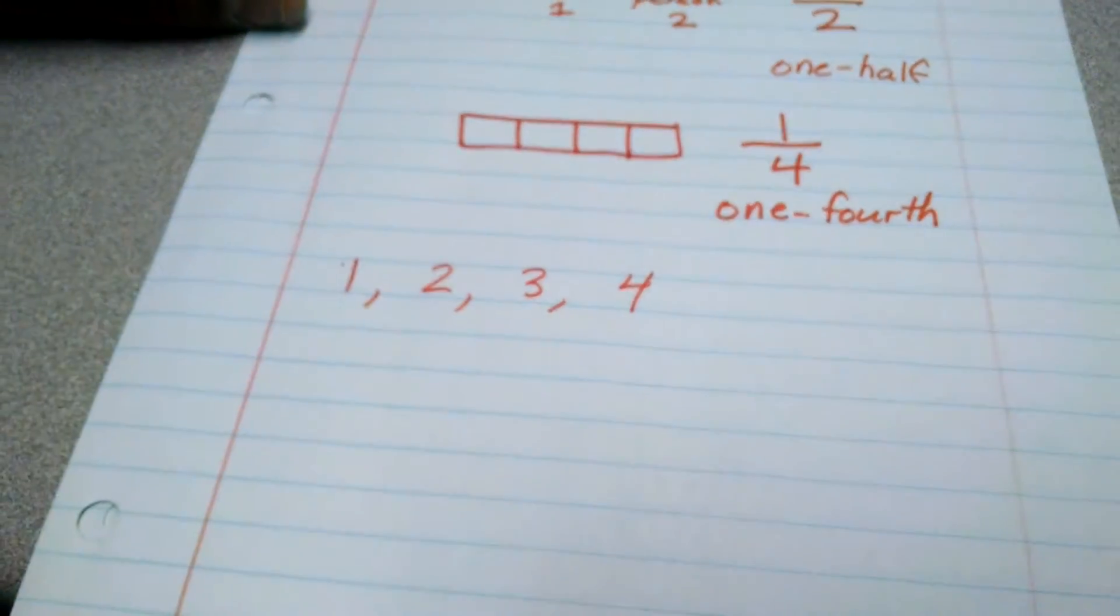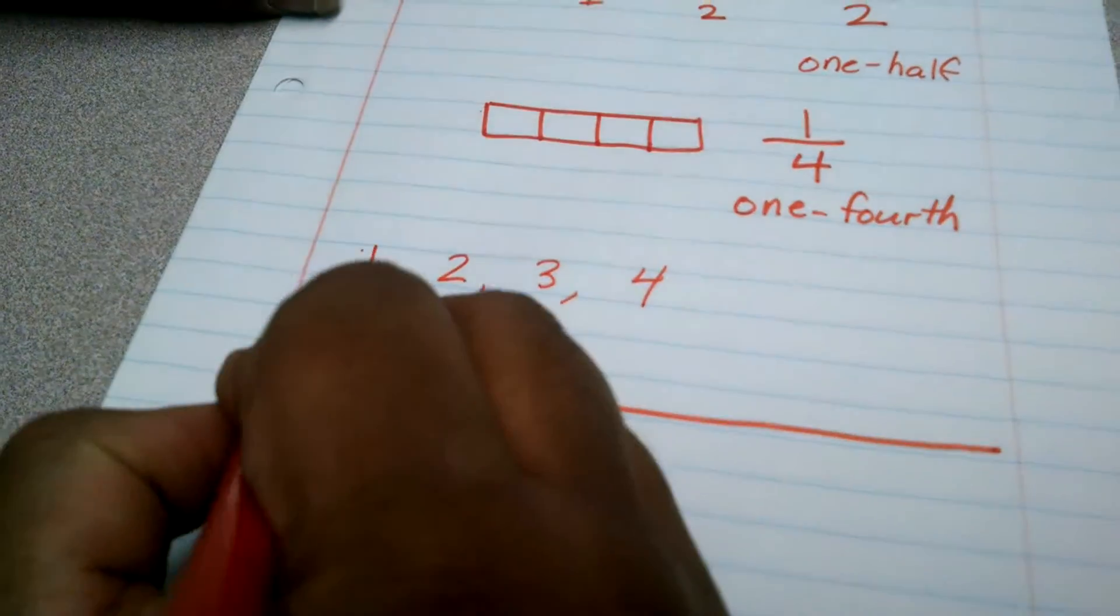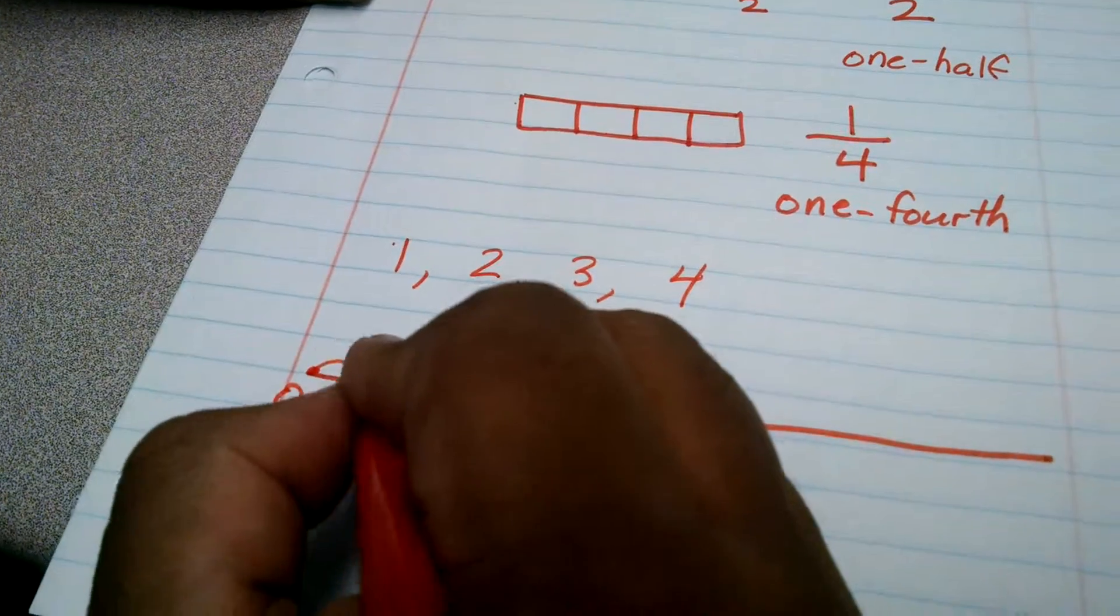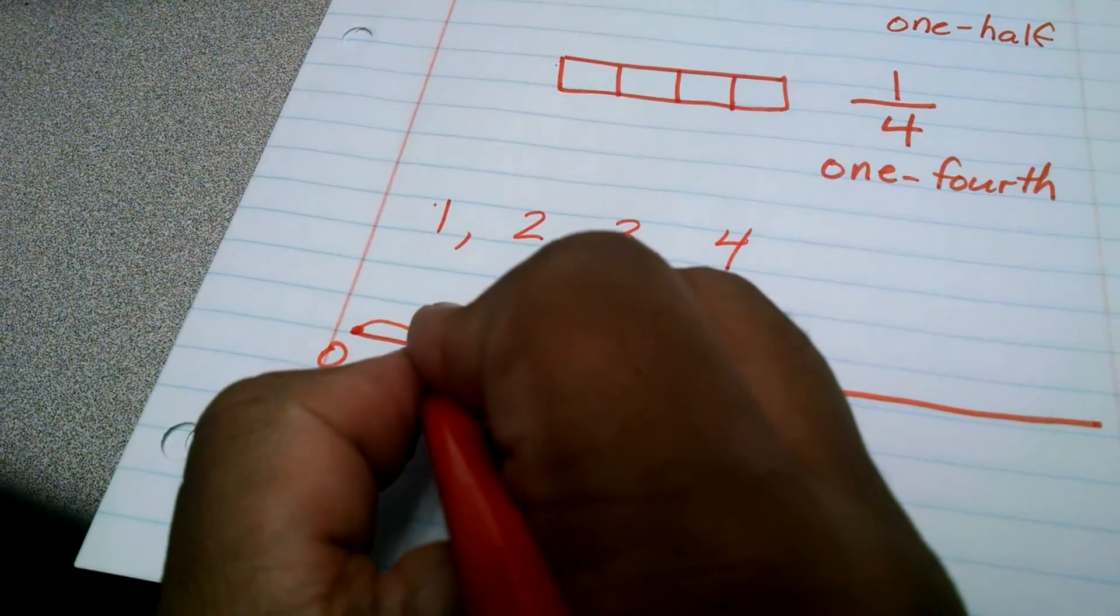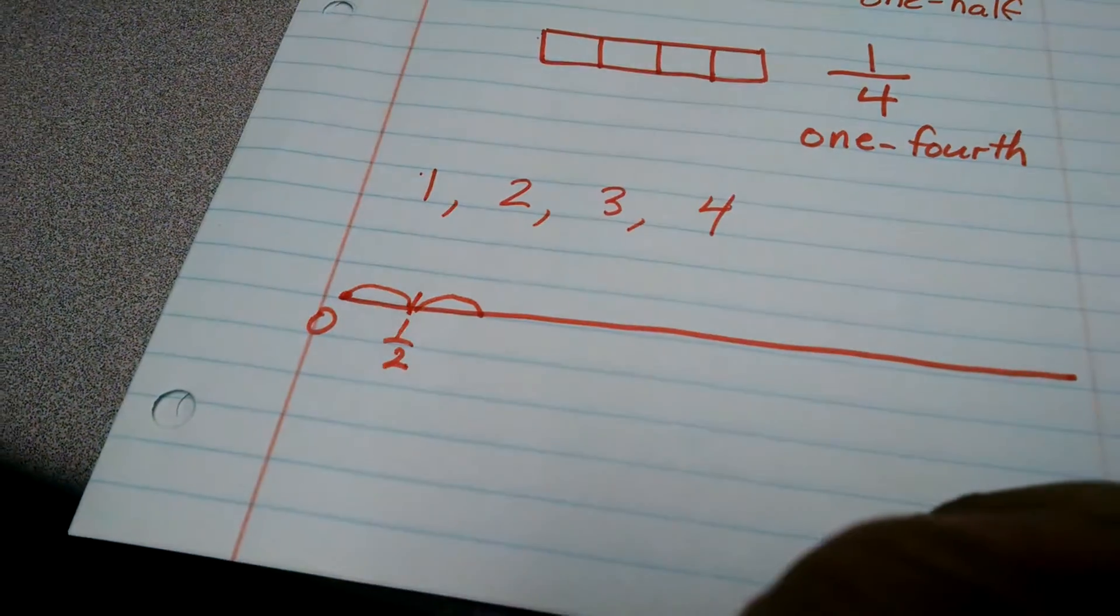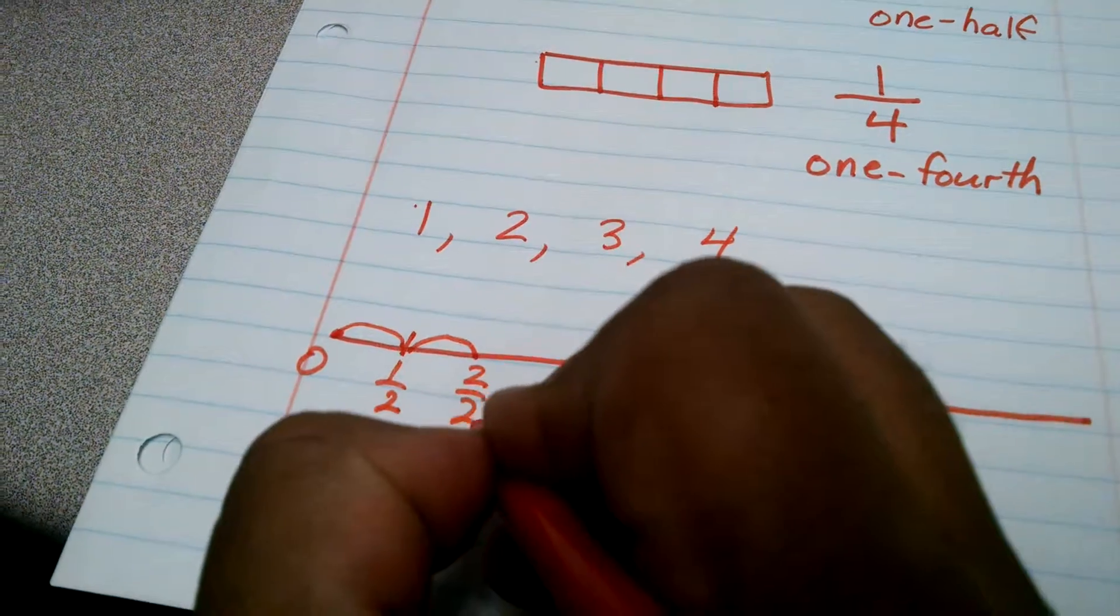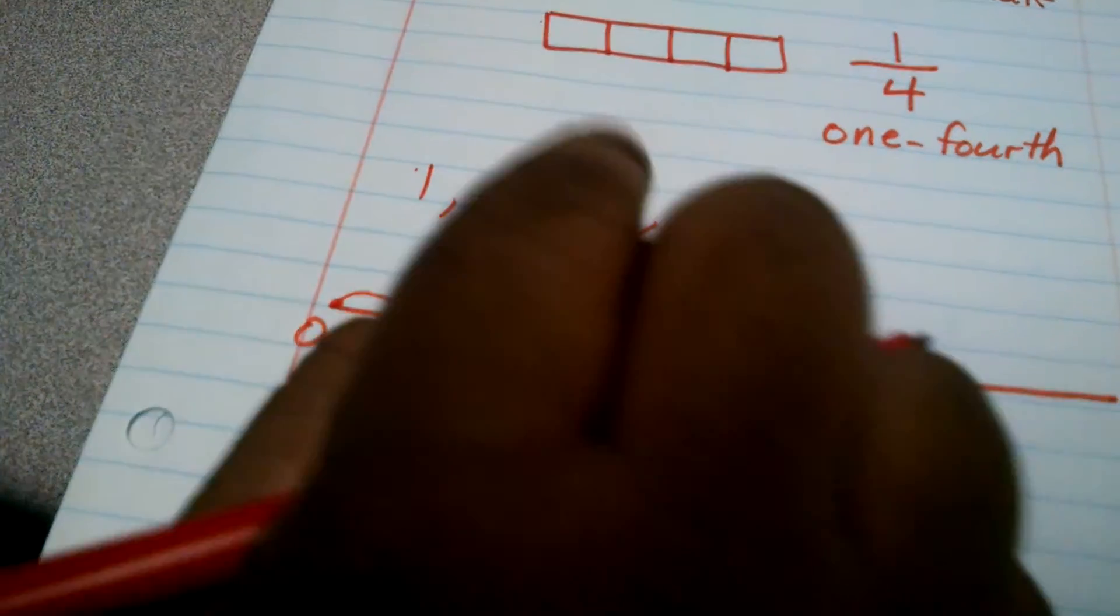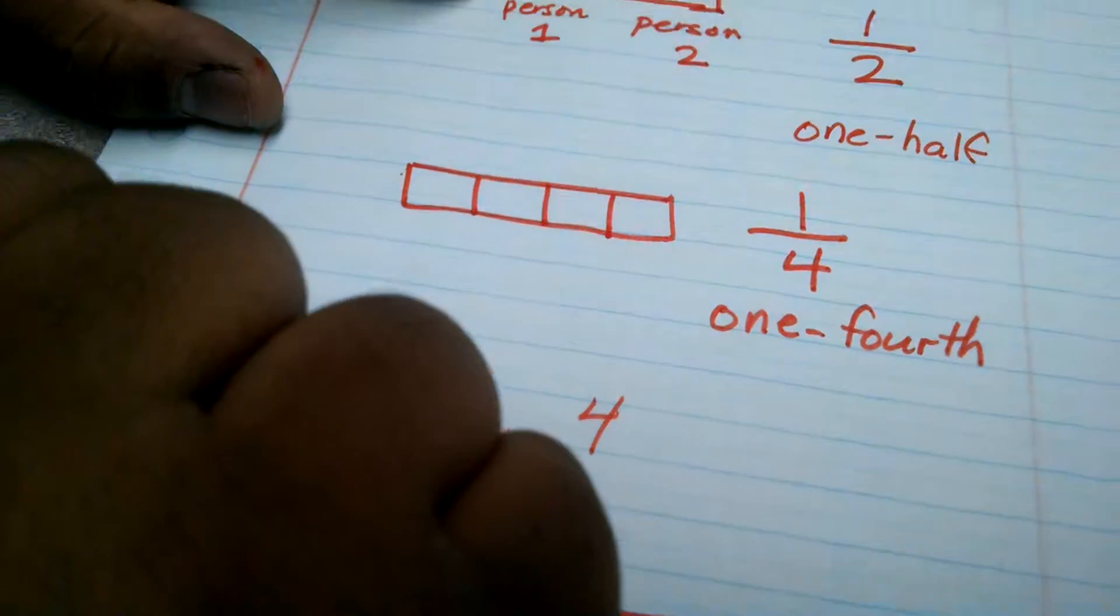do that. Let's count by halves. Here's my starting point: zero. If I count by a half, that's one-half. I count by another half, that's two halves, but that's one whole, just like we saw up here. So